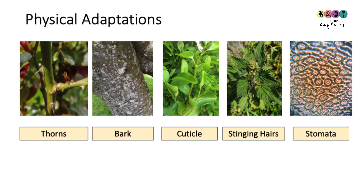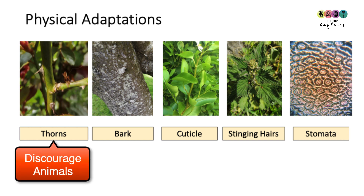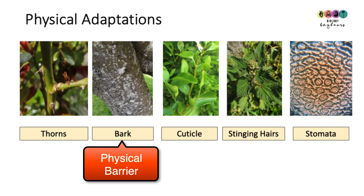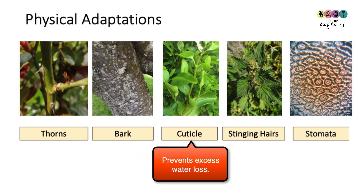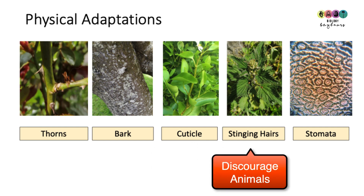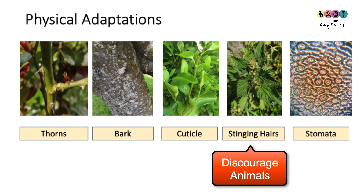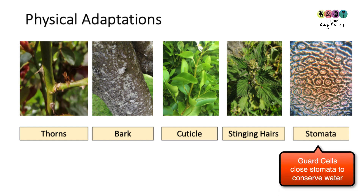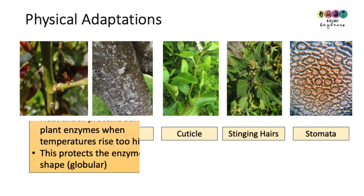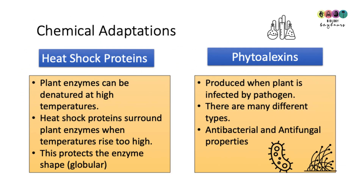Thorns on a plant will deter animals from biting into it. The bark on trees acts as a physical barrier, preventing the entry of pathogens. The waxy cuticle on leaves prevents excess water loss. Stinging hairs in nettles are painful because they inject a toxin into any animal that brushes against them, acting as a deterrent. Plants also have stomata whose guard cells can close during drought or extreme temperatures.